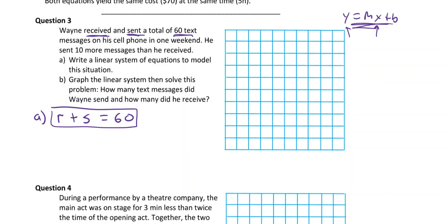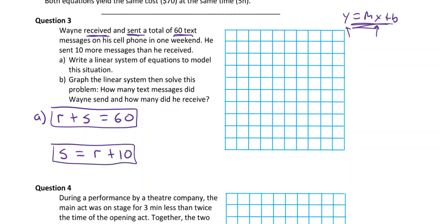Second equation: he sent 10 more than he received, so S = R + 10. Whatever he received, he sent 10 more than that. This part can be tricky, but with practice it becomes clearer. We now have a system of two linear equations, but they're not yet arranged properly for graphing.